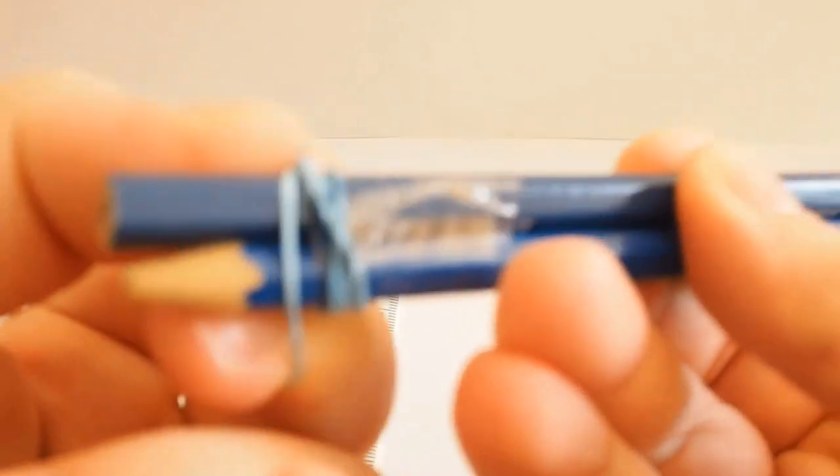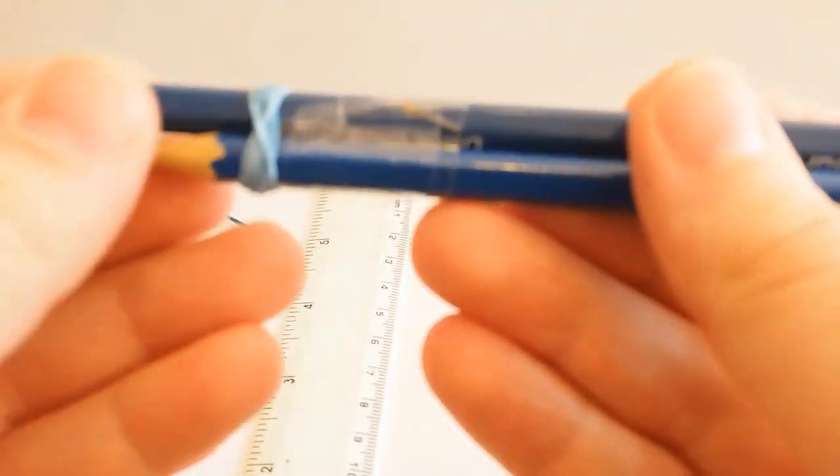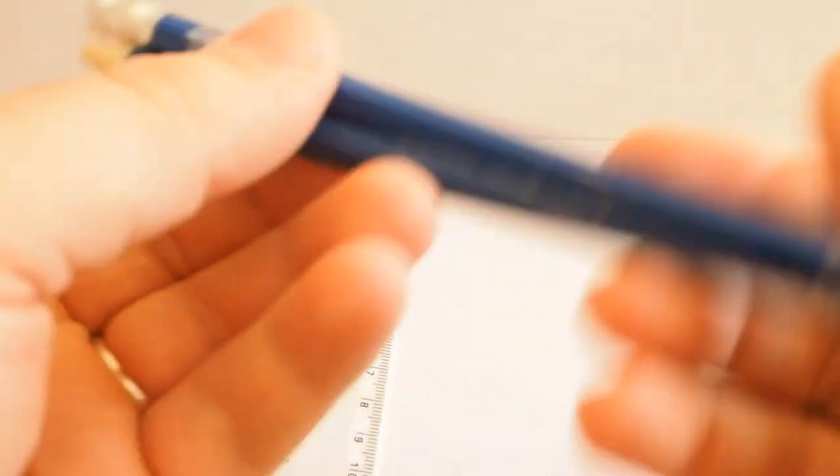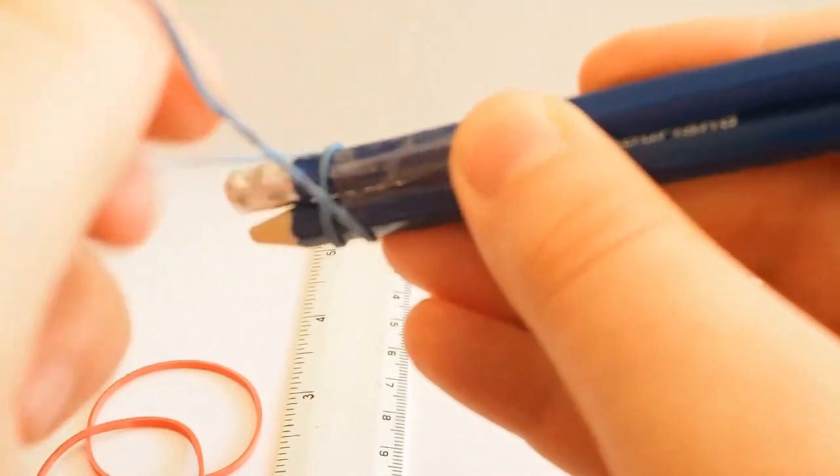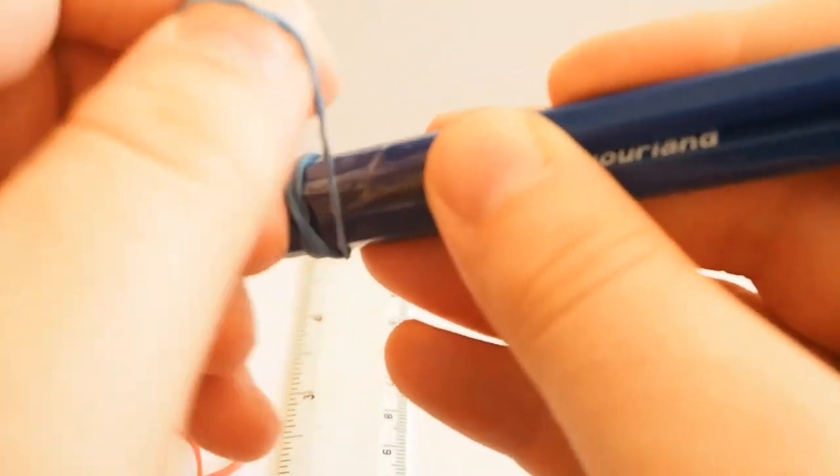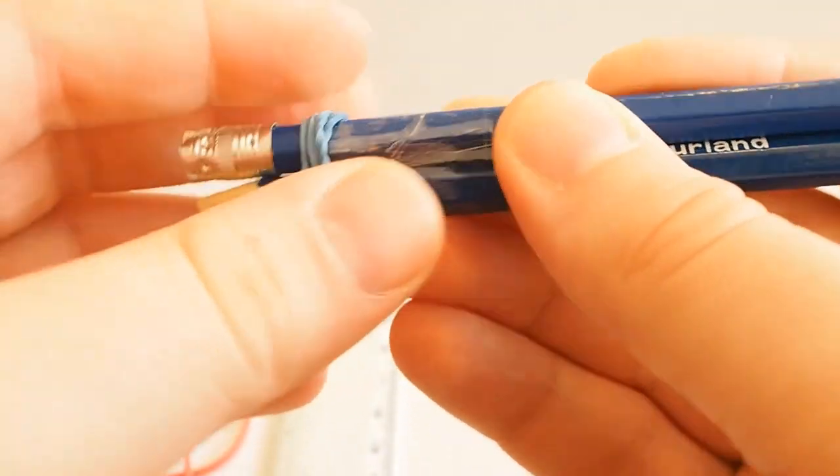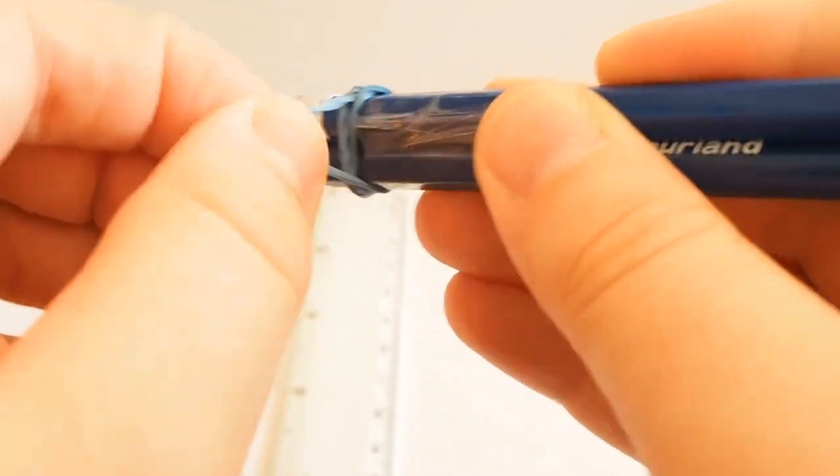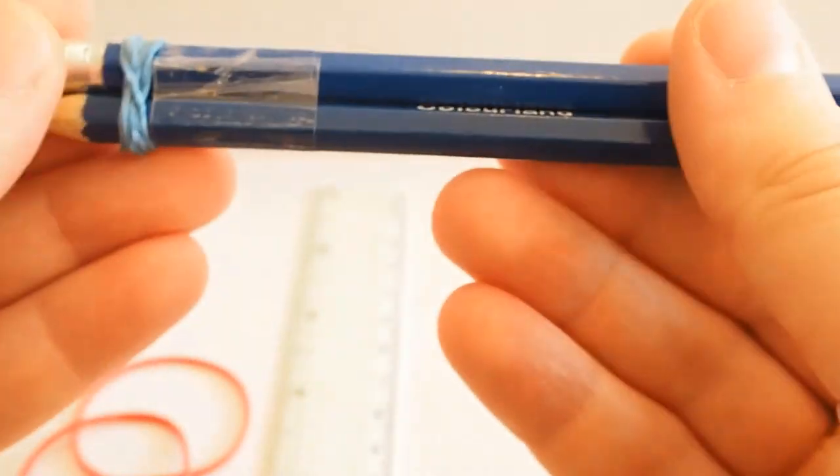I'm just going to loop the blue elastic band around the end of these pencils. Like so. A few times. Until it's really tight. In fact, if I can do that once more, that would be even better. Just a little bit tighter. There we go. Really tightly holding those pencils together.